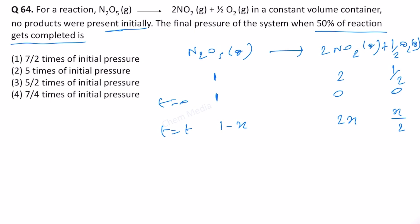Now what they are asking is the final pressure when 50 percentage of the reaction gets completed. We can say that 50 percent is complete only when this becomes half. So this means x has to be 1/2 so that we can get 1/2 here.